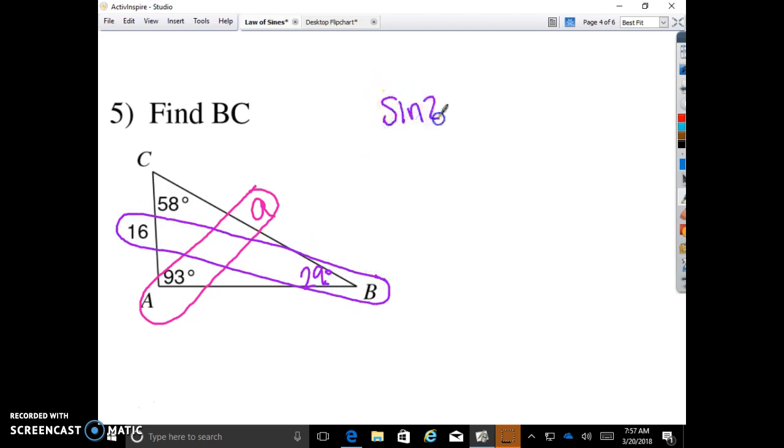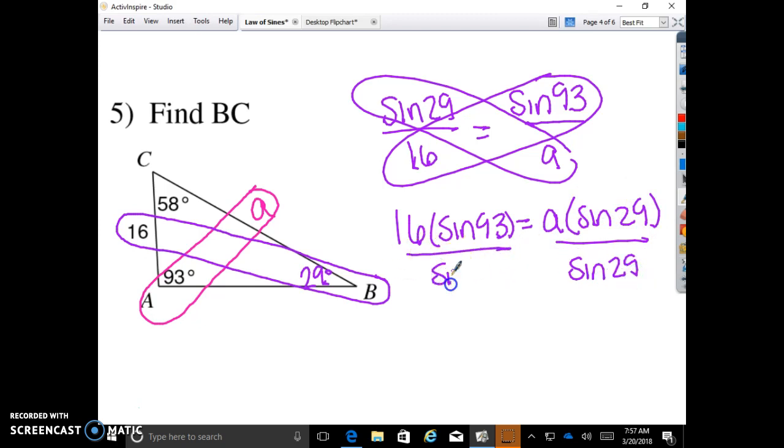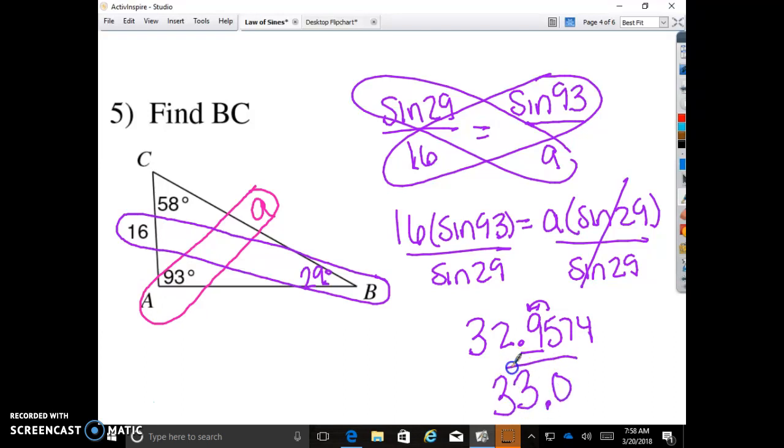So sine of 29 is to 16 as sine of 93 is to A. Cross products and solve. 16 times sine of 93 equals A times sine of 29. Divide by sine of 29 on both sides. And you get that A equals whatever that is. So 93 sine times 16 equals divided by 29 sine equals, and I got 32.9574. Round it to the nearest tenth. Once again, the nine becomes a 10, so we get 33.0.